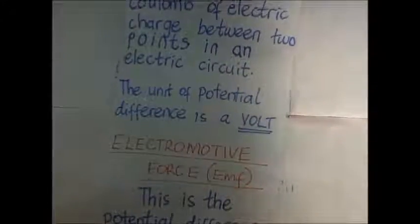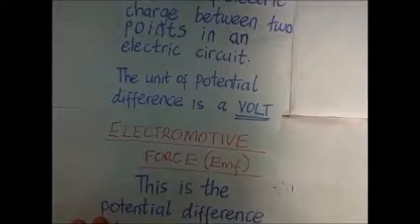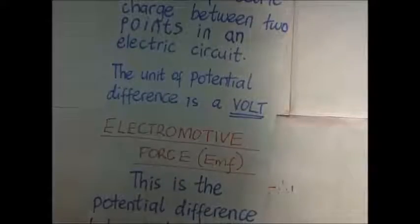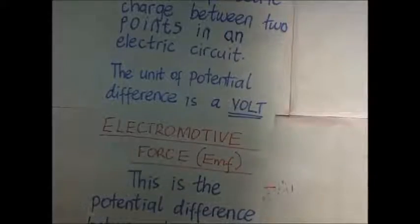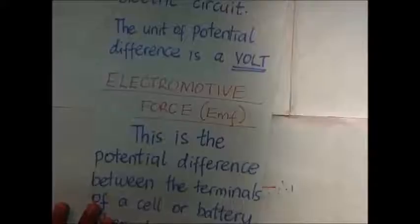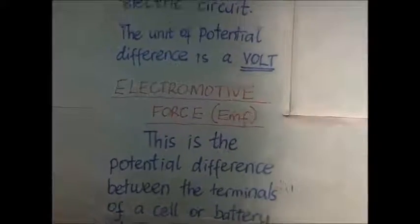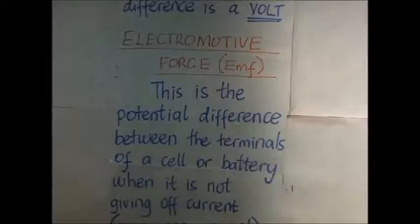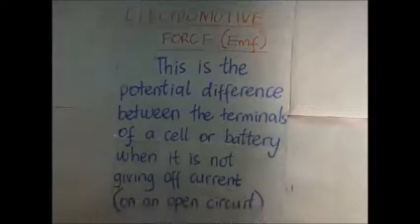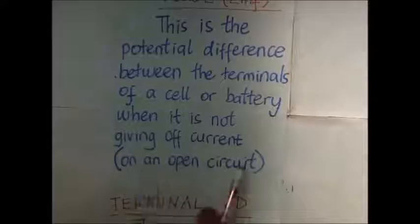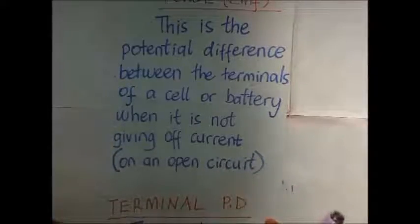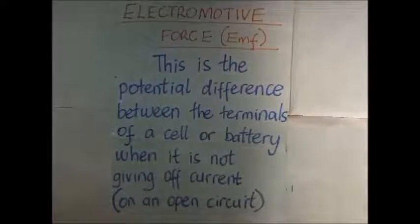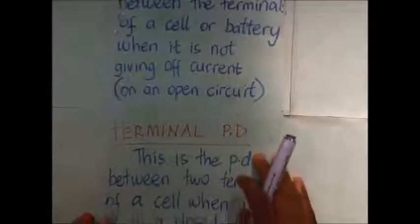The next key definition is electromotive force. Electromotive force is the potential difference between the terminals of a cell or battery when it is not giving off current — that is, when it is on an open circuit. When a cell is on an open circuit, the potential difference between its ends is what we call the electromotive force.